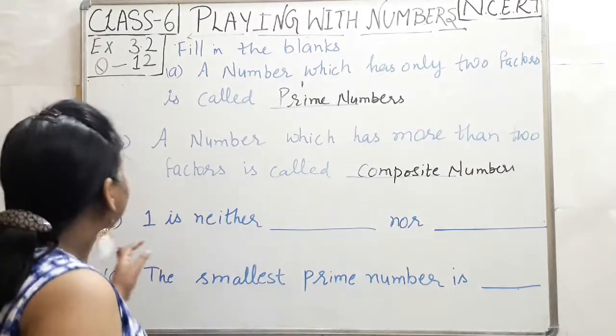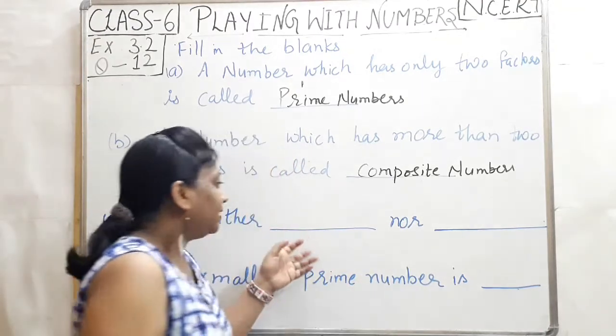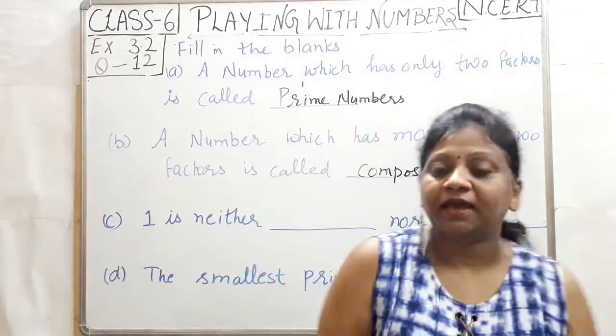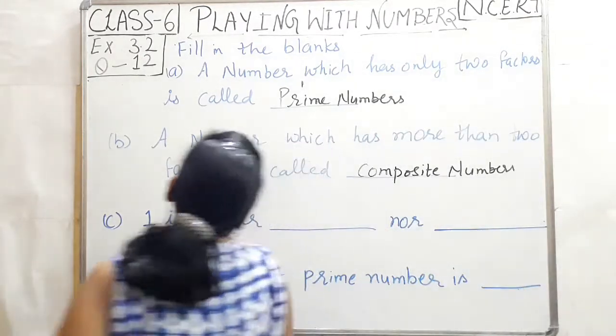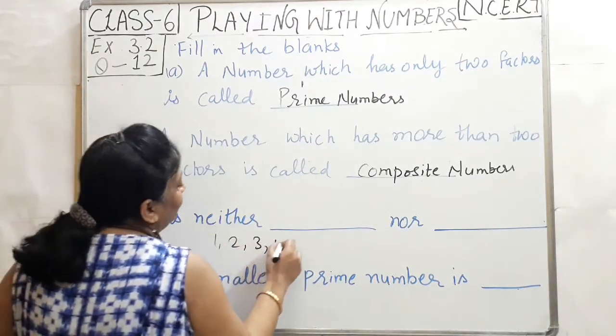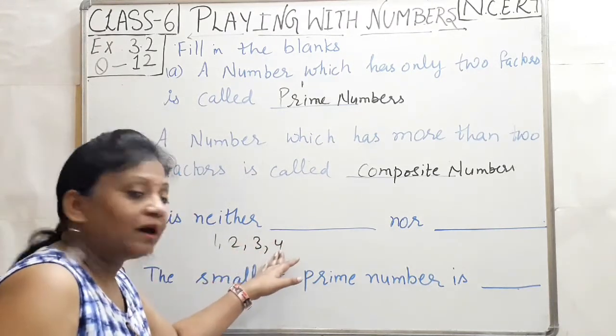Part C: 1 is neither dash nor dash. One is neither dash nor dash. So first, let's start with one. One, two, three, four. Now, two is prime number. Three is prime number. Four is composite number.